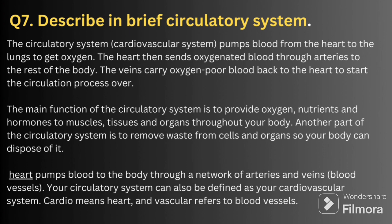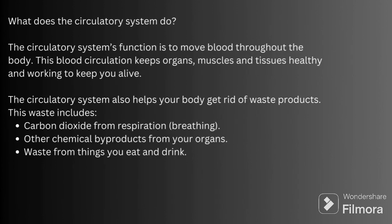The next question is: describe the circulatory system. The circulatory system, also called the cardiovascular system, pumps blood from the heart to the lungs to get oxygen. The heart then sends oxygenated blood through the arteries to the rest of the body. Veins carry oxygen-poor blood back to the heart to start the circulation process. The main function of the circulatory system is to provide oxygen, nutrients, and hormones to muscles, tissues, and organs, and to remove waste from cells and organs.